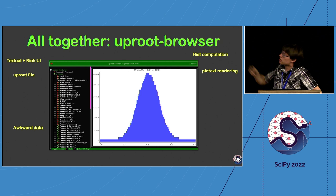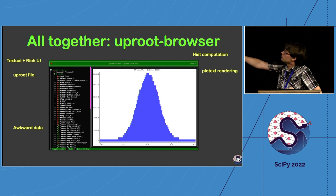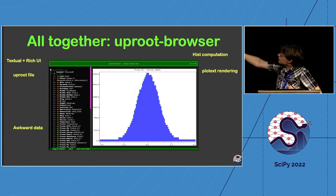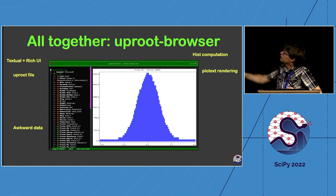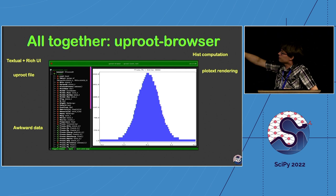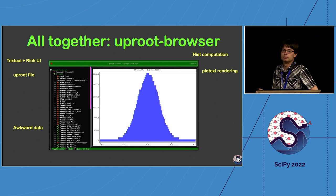A package called uproot-browser shows how all these different pieces work together. The interface is built with Textual — a Rich terminal UI — so it runs in your terminal. You can scroll and click on ROOT file contents. The data is often in awkward array format. Clicking on something uses hist to do a quick histogram over the data, then renders it through plotext. You can look through your files without needing to connect an X display, and pressing the right key will spit out exactly the uproot commands you'd need in Python to load that same data.